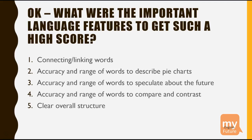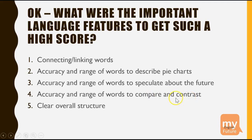What were the important language features to get such a high score? This text would get a 9 in IELTS writing. The student has excellent connecting or linking words, accurate words to describe pie charts with a good range of them, and a similar feature for speculating about the future — things like will, likely, could — and to compare and contrast, words like however, more, fewer, in contrast. And the overall structure is extremely clear.